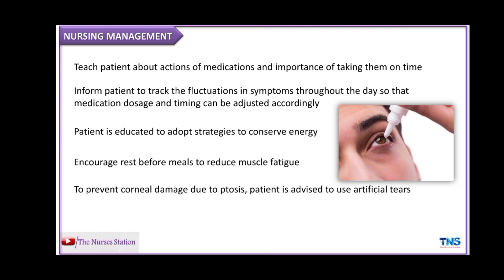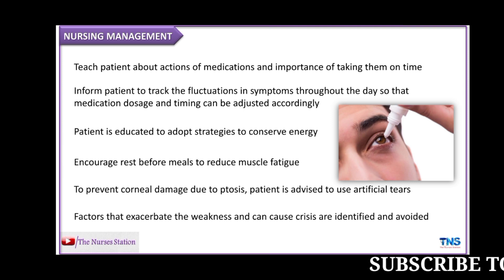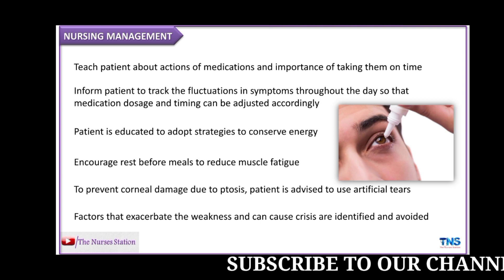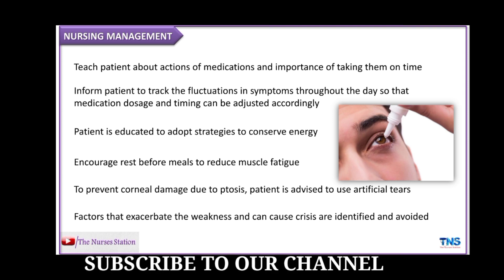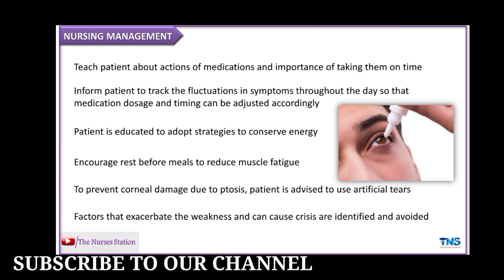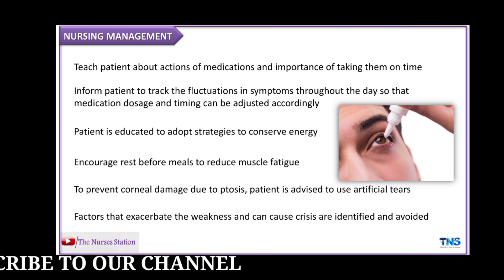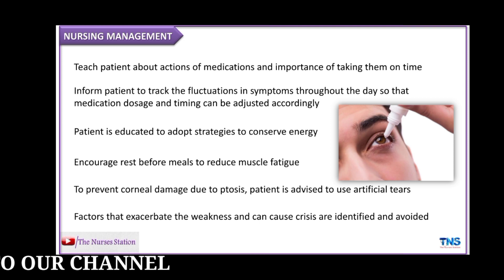To prevent corneal damage due to ptosis, the patient is advised to use artificial tears. The factors that exacerbate weakness and can cause myasthenic crisis are identified and avoided. Finally, the nurse needs to administer medications as ordered by the physician.